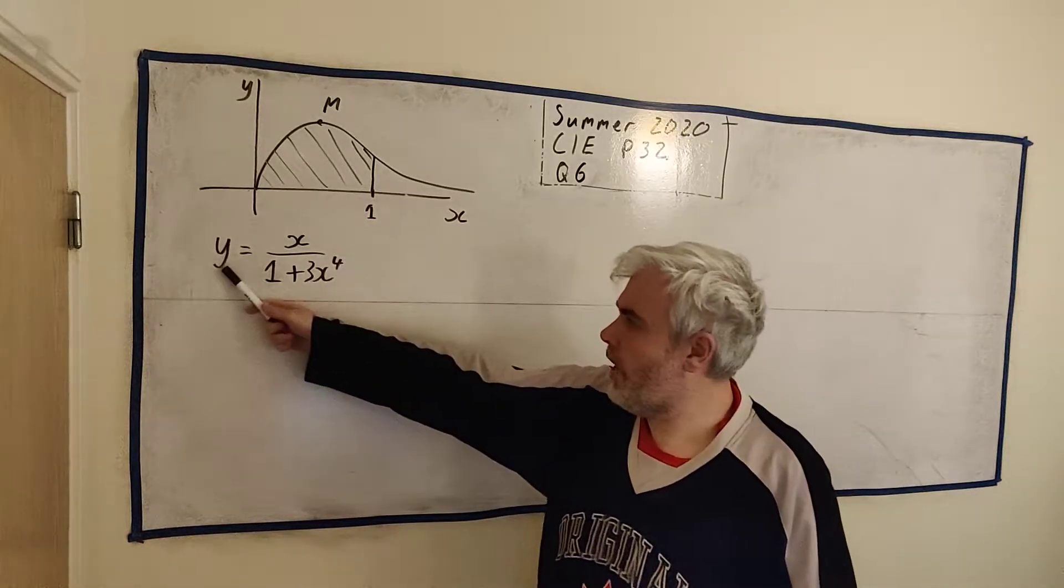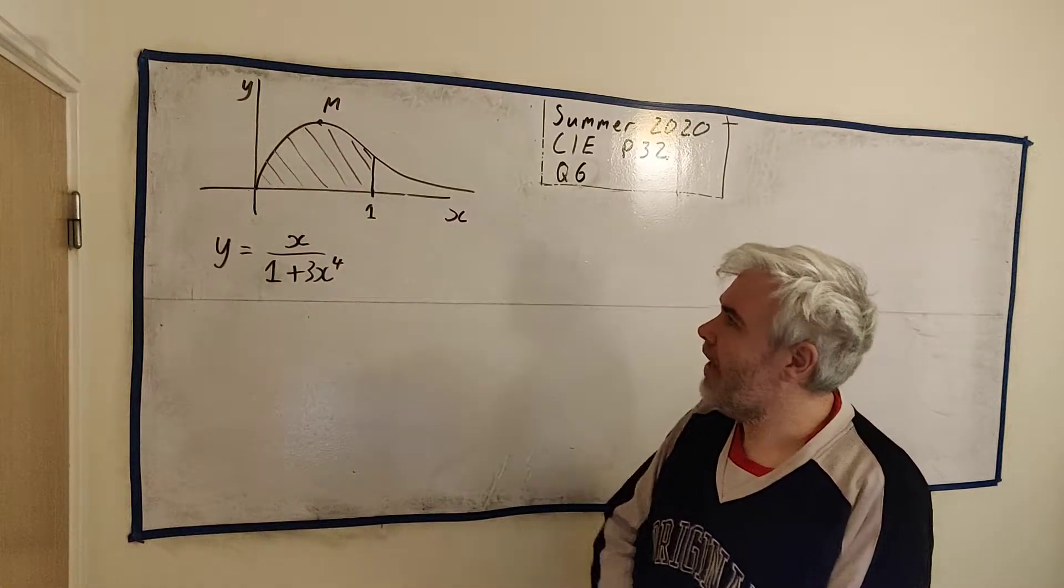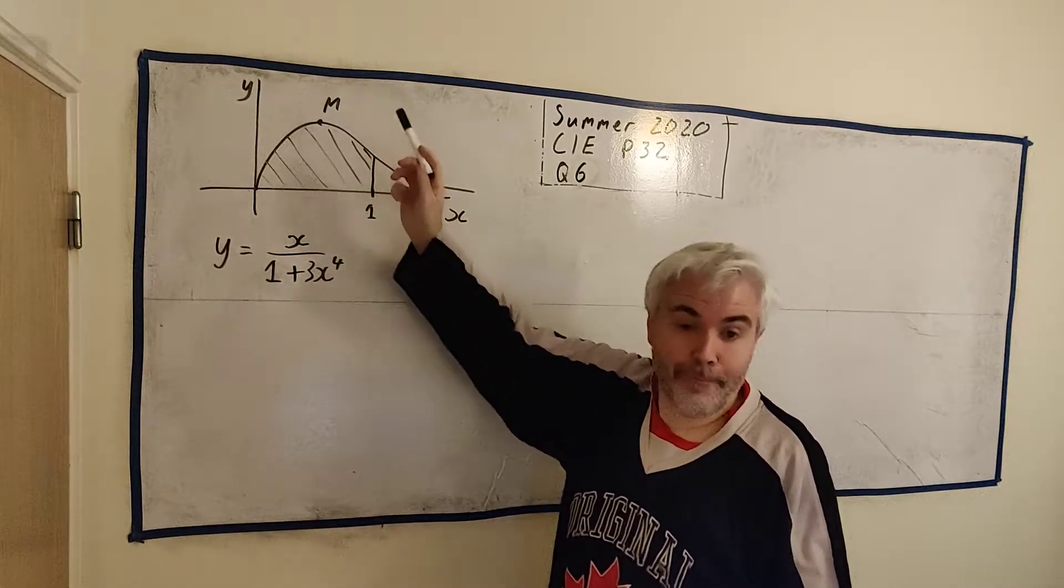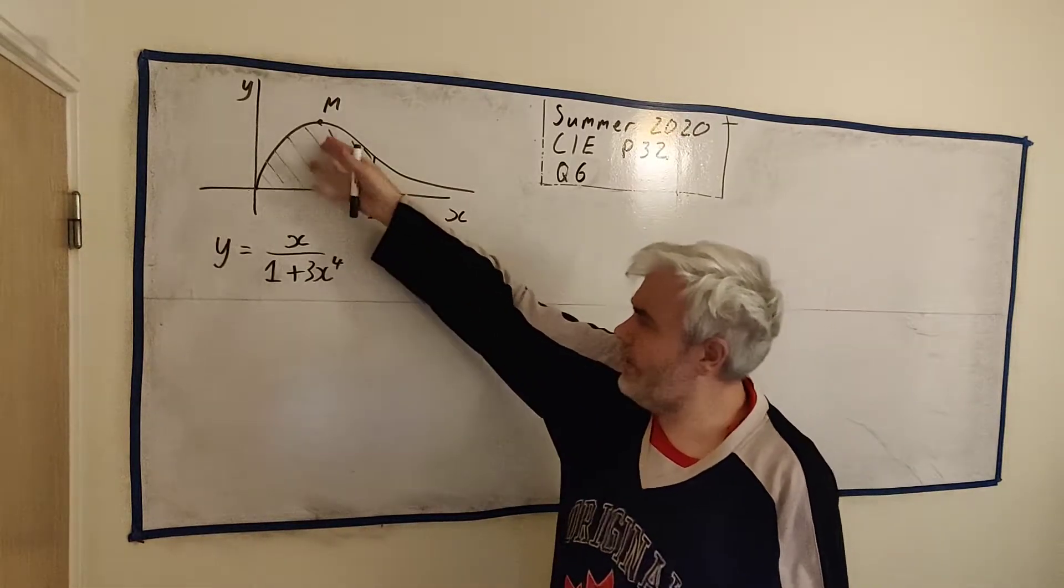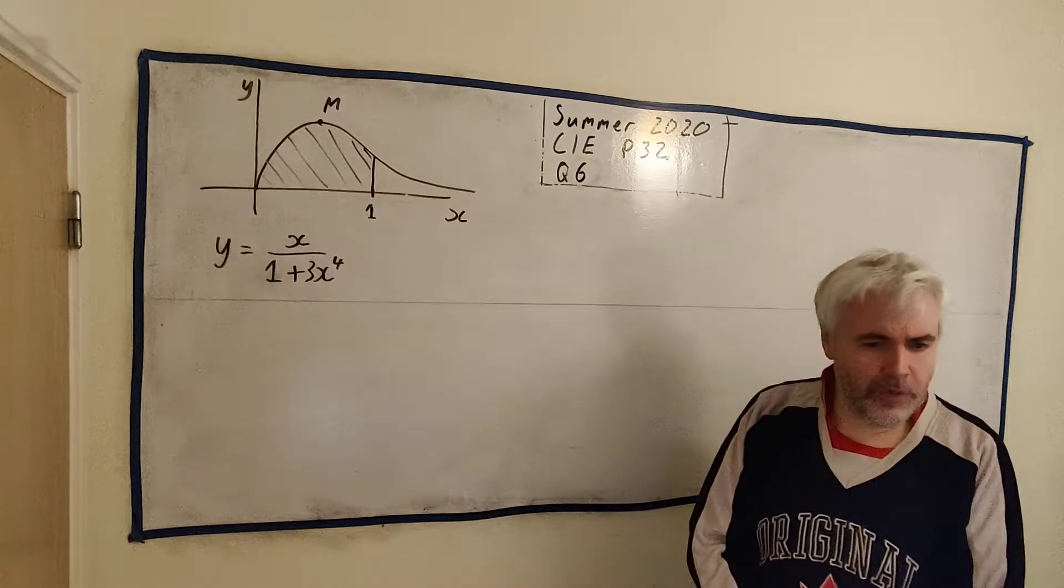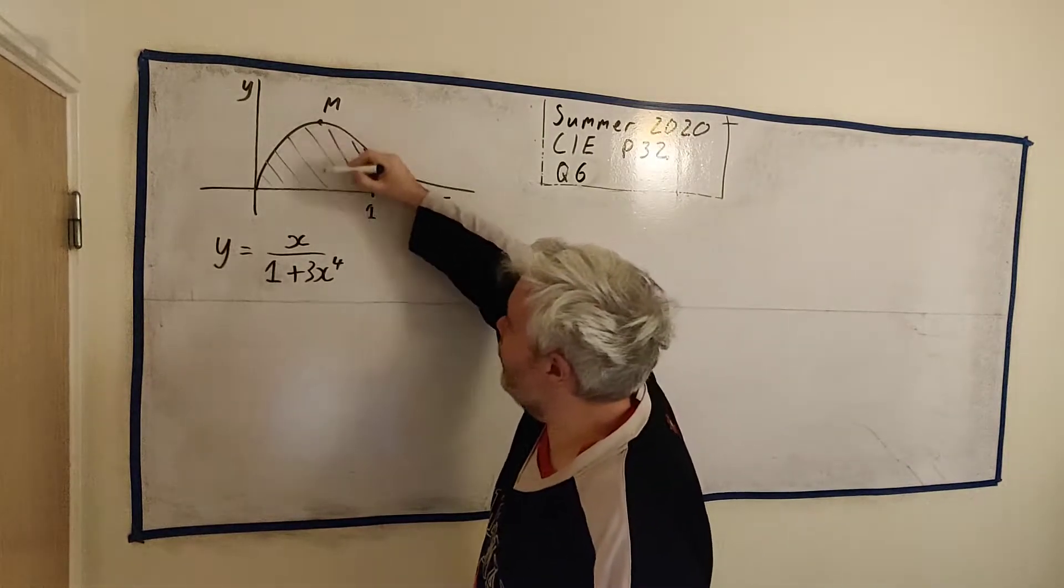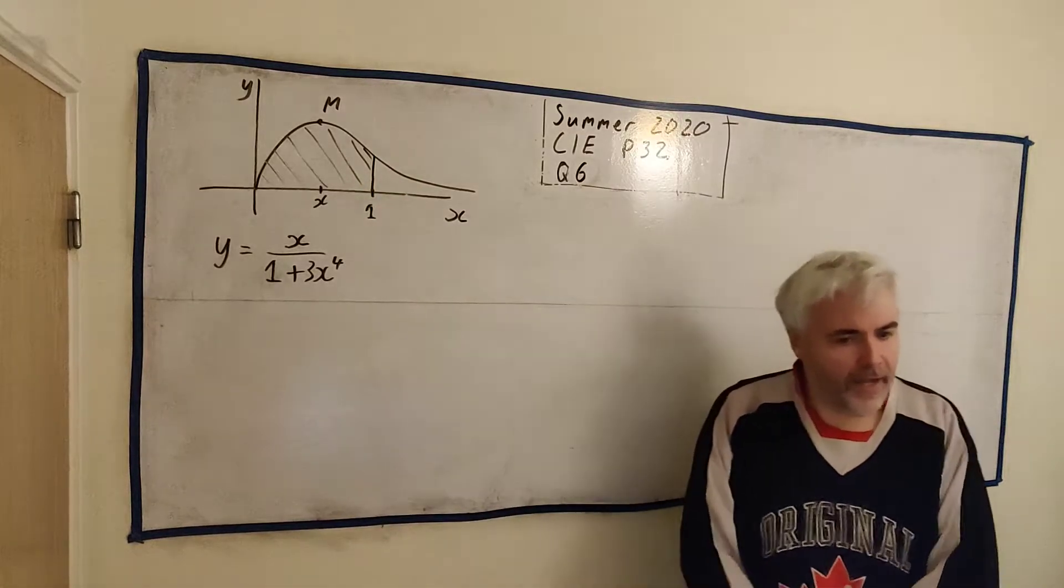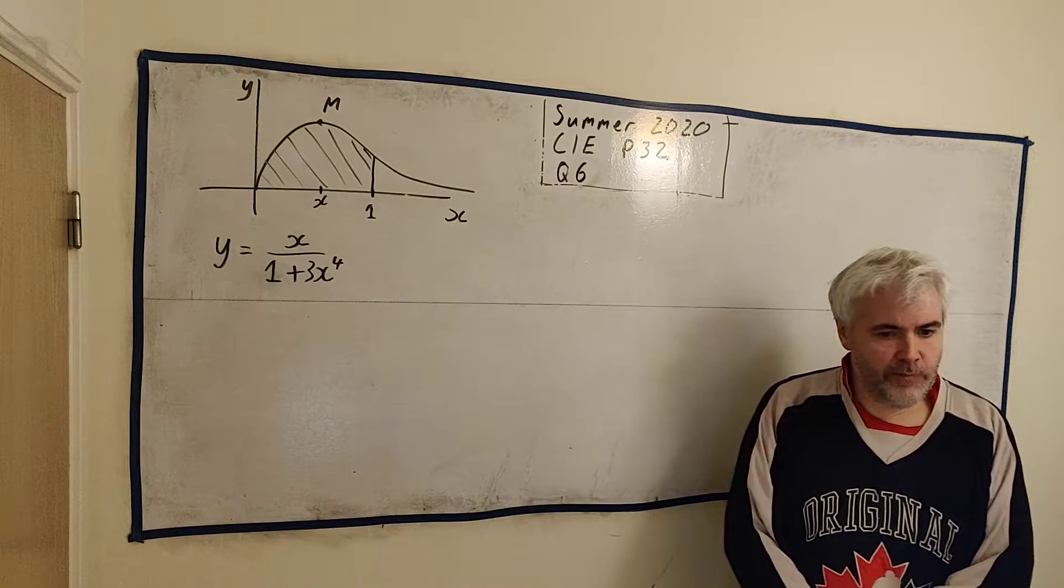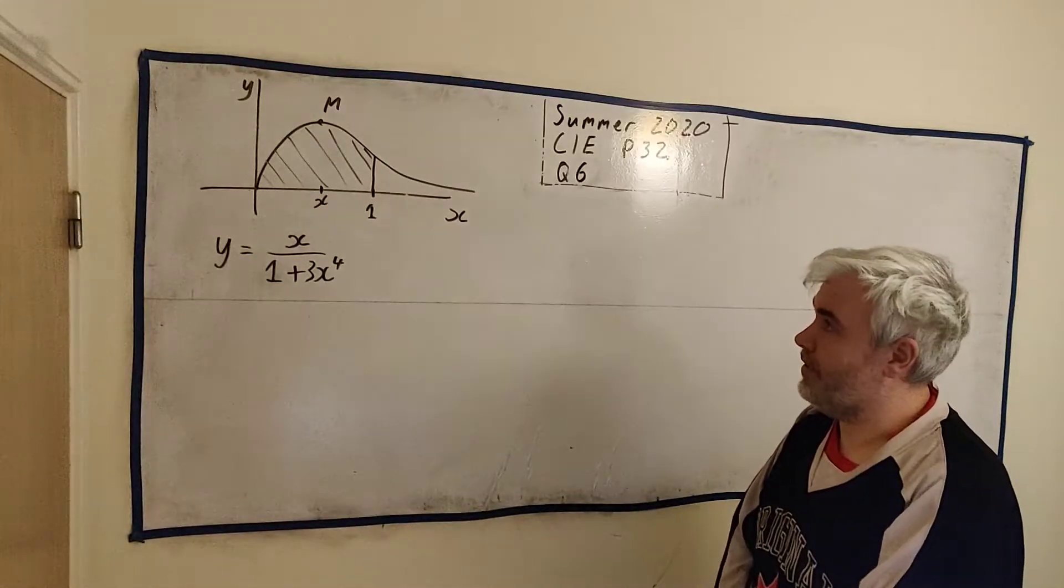In this question they give us the equation and they show us what it looks like, an image of this curve. And they tell us there's a point M, it's the maximum, the local maximum here. We'll shade in regions for part B, so we'll just stick with part A at the moment. They want us to find the x-coordinate of M, basically this number here. They want us to find it correct to three decimal places.